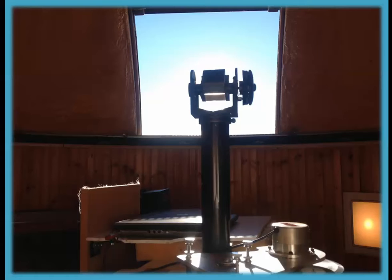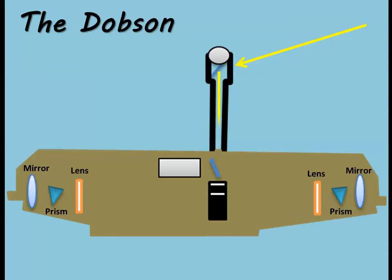So how does the Dobson work? Let's walk through a measurement. Solar radiation enters a tube that reflects down into the machine. From there, sunlight bounces off another mirror and goes back through a lens and prism. Light reflects off a mirror and goes back through the prism. From there, the light is separated into a spectrum at known wavelengths.